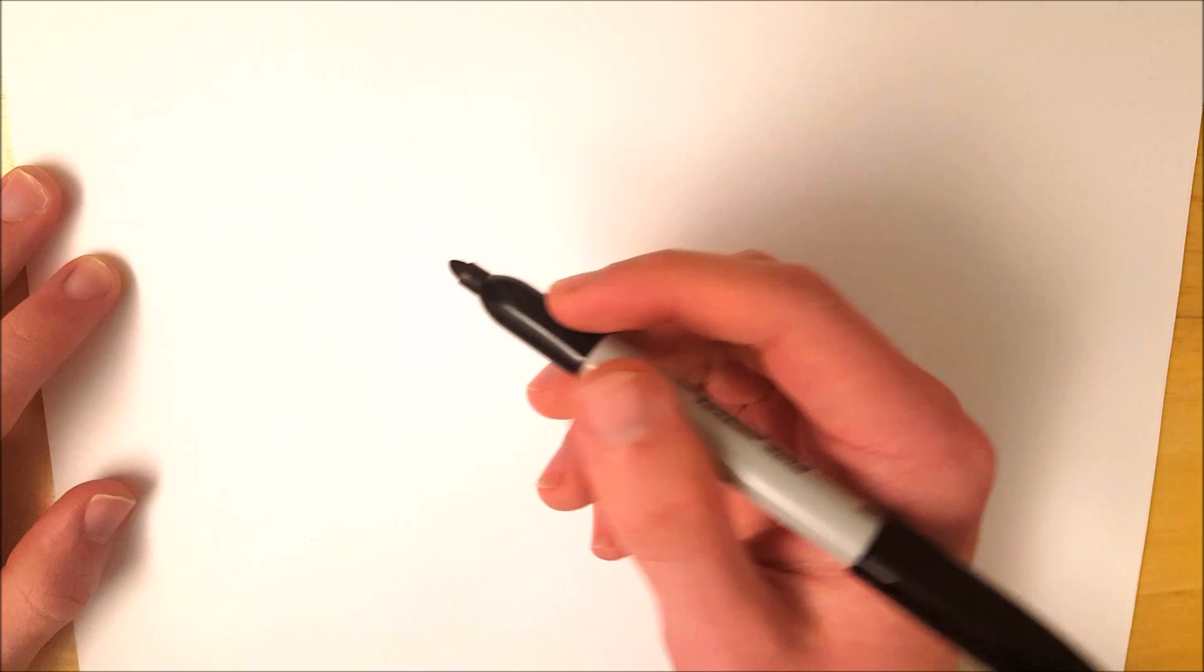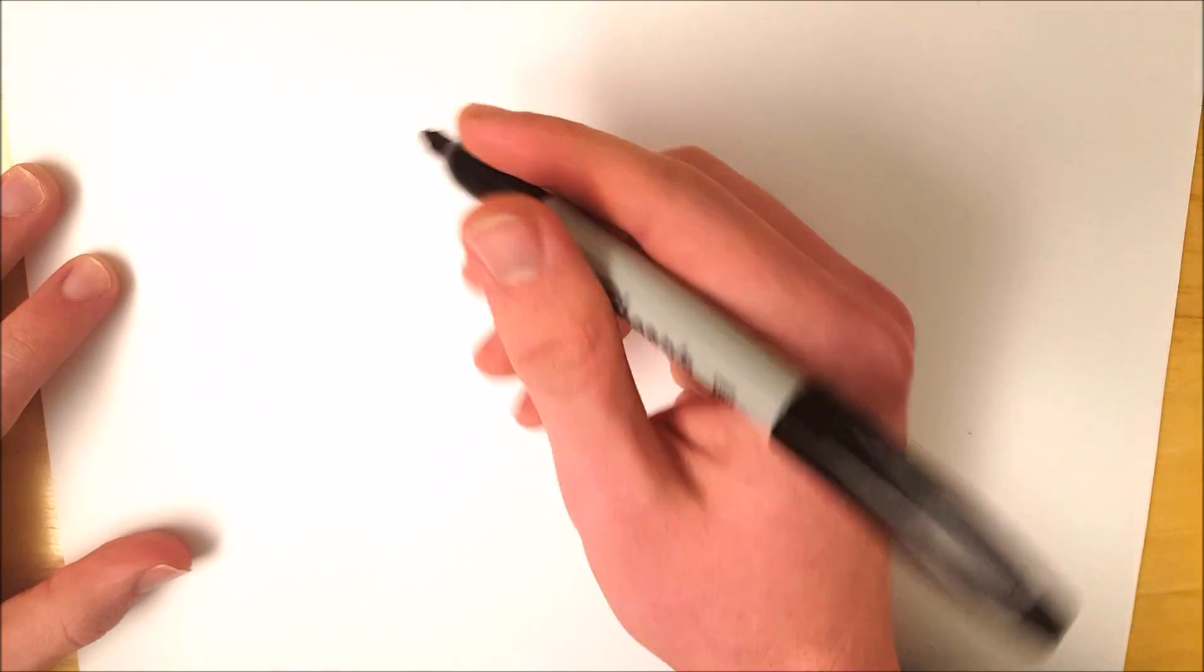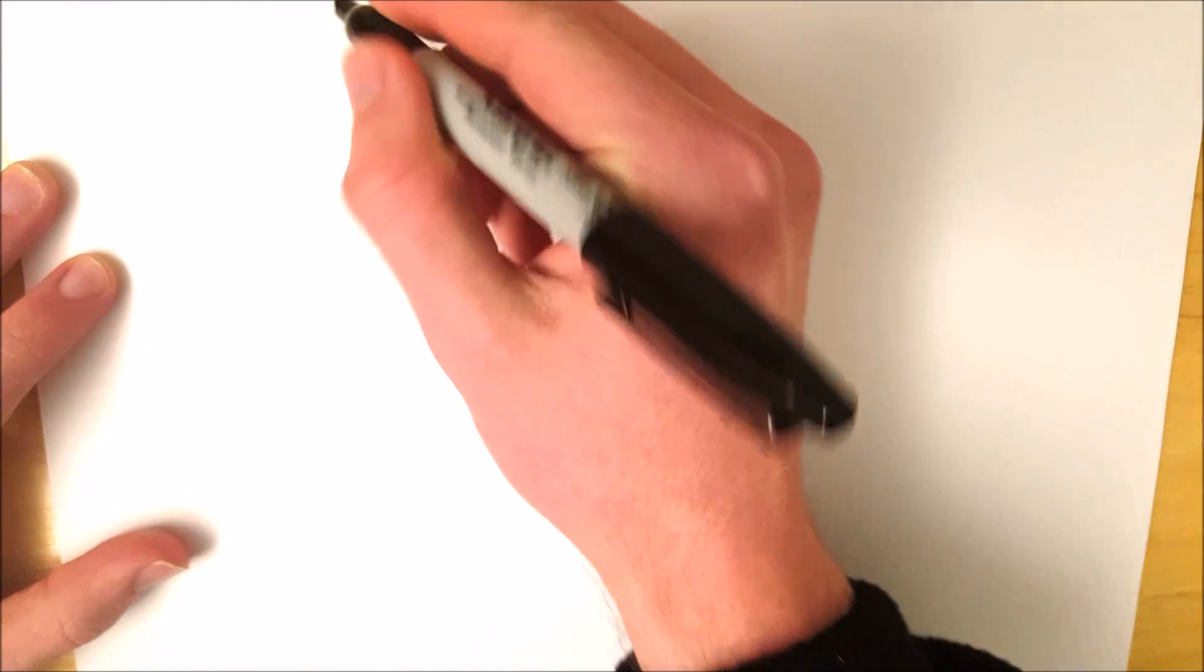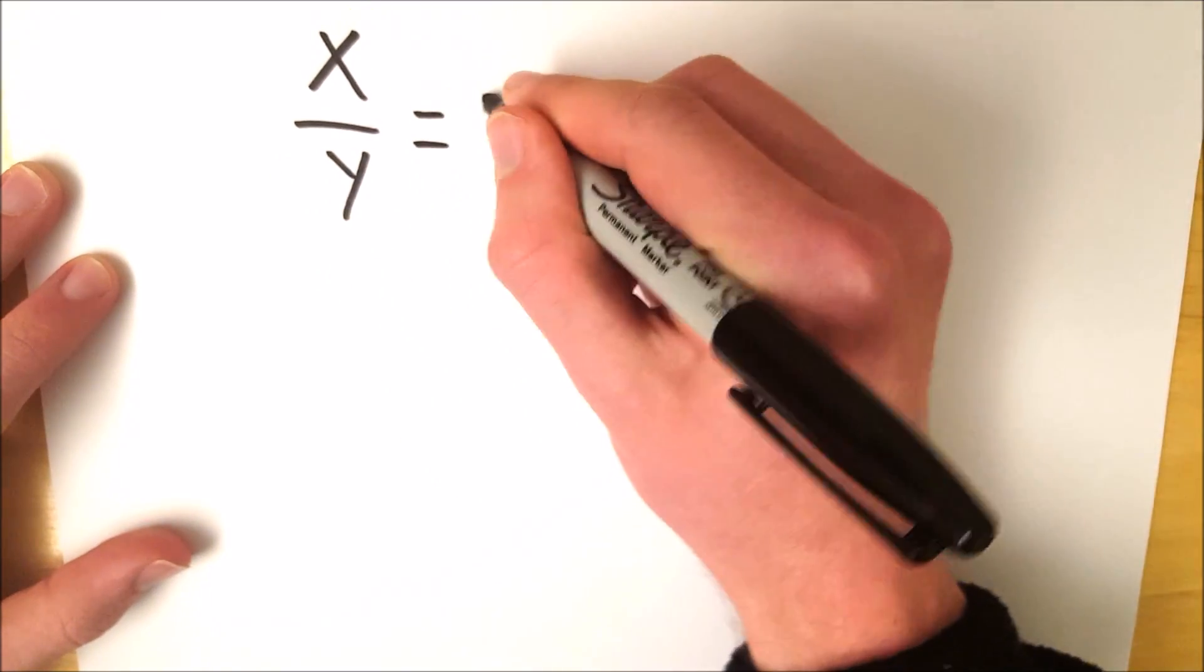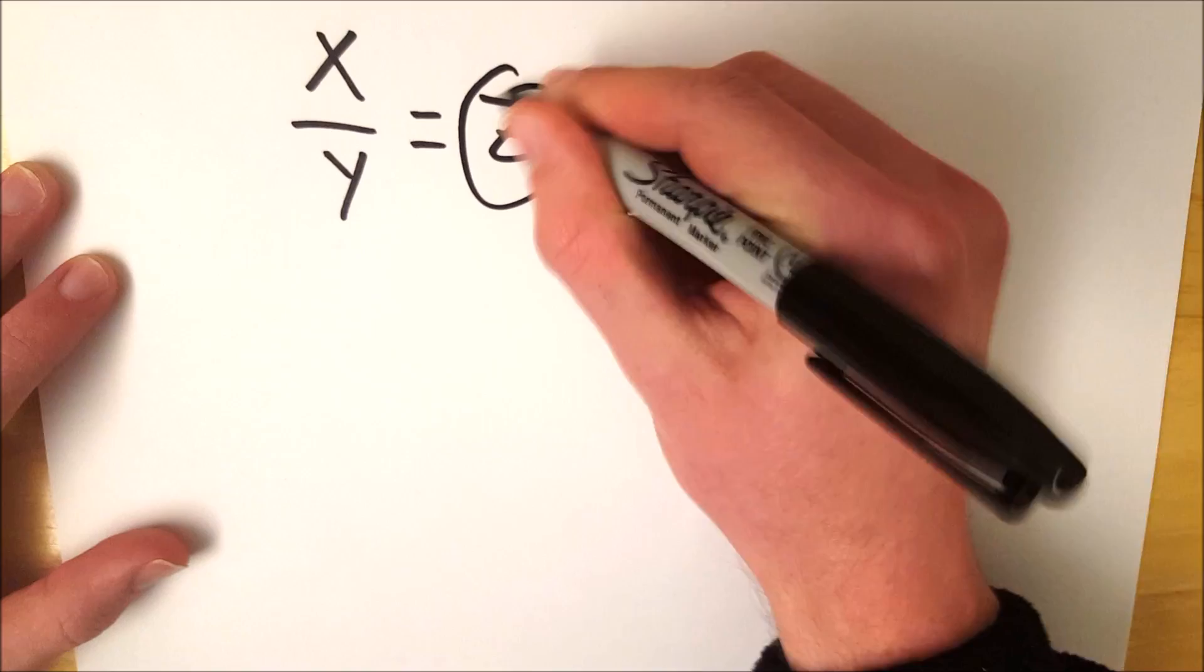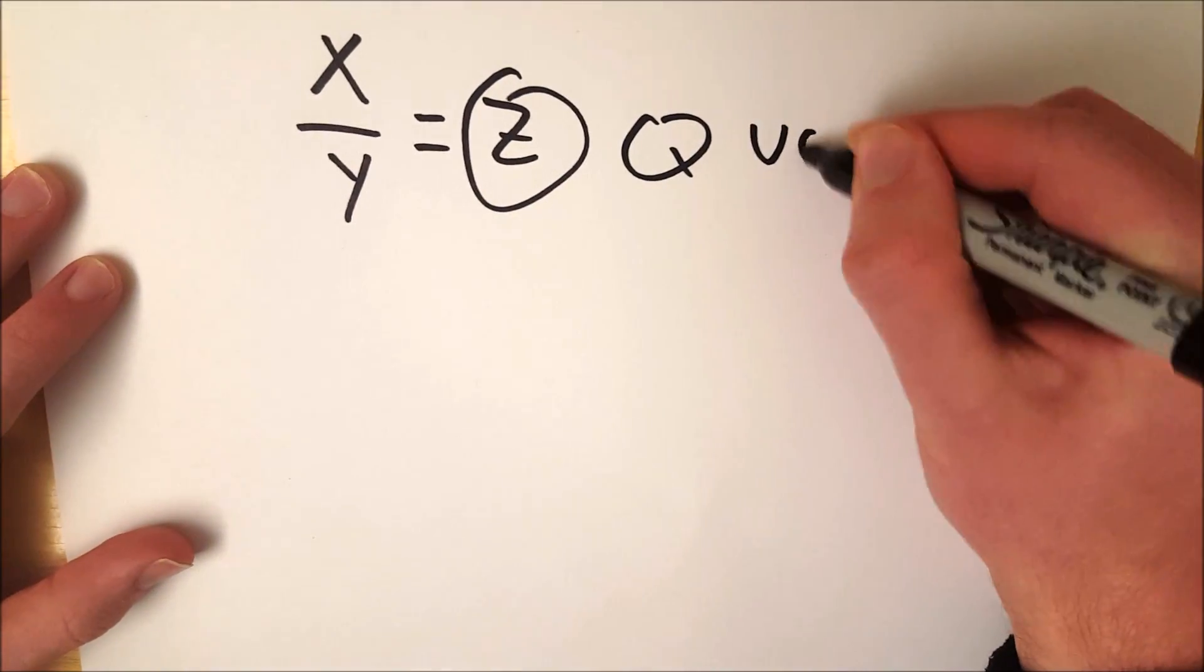A quotient is the number you get when you divide one quantity by another. Very simple. So if we do x divided by y, and that happens to be z, then z is the quotient.